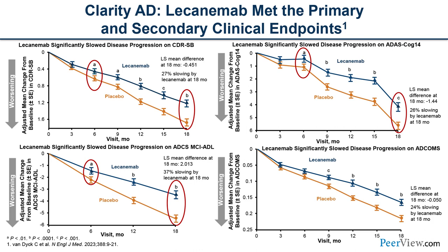Lecanemab met all primary and secondary clinical endpoints. Compared to placebo, lecanemab-treated patients showed 27% slowing on the CDR Sum of Boxes, 26% slowing on the ADAS-Cog, 37% slowing on the ADCS MCI ADL, and 24% slowing on the ADCOMS composite measure — consistently demonstrating less cognitive decline across all outcomes.